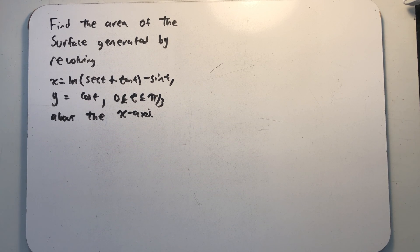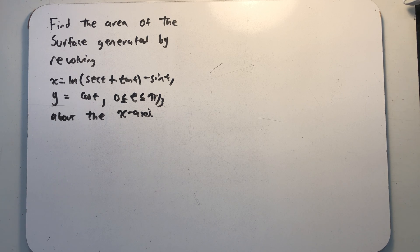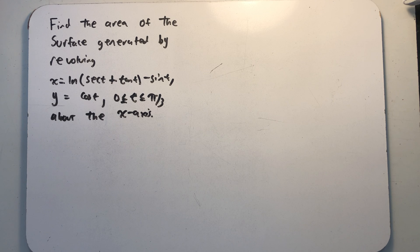We've been asked to find the area of a surface generated by revolving parametric equations around the x-axis. The parametric equations are x equals the natural log of secant t plus tangent t, quantity minus sine of t, and then y equals cosine of t, and the interval for the parameters from 0 to pi-thirds.